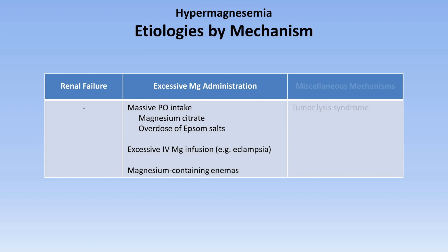The only significant miscellaneous mechanism is tumor lysis syndrome, in which a very large number of cancer cells, either spontaneously or in response to initiation of chemotherapy, suddenly die and break apart, releasing a large amount of intracellular magnesium and all of their intracellular contents. In general, the hypermagnesemia from this will be a relatively minor issue as compared to the hyperkalemia.